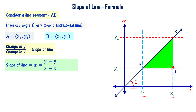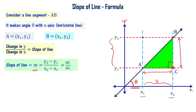So slope of the line M equal to y2 minus y1 divided by x2 minus x1. Here y2 minus y1 is the line segment BC and x2 minus x1 is the line segment AC. That's why I can say that slope of line in this particular case is BC by AC.